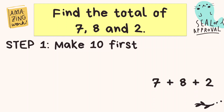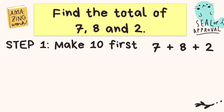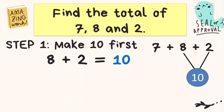Let's add the addends: seven plus eight plus two. Now, what do you think are the numbers that we can combine to make ten? Yes, it's eight and two, right? Eight plus two is equal to ten.